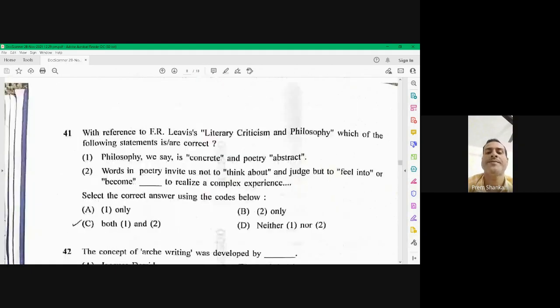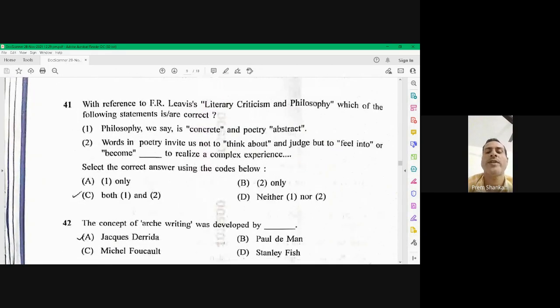Question number 41, with reference to F.R. Levis' literary criticism and philosophy, which of the following statements are correct or is correct? The first option, philosophy we say is concrete and poetry is abstract. This option itself is wrong because F.R. Levis says that philosophy is abstract and poetry is concrete. Exactly opposite is the right.